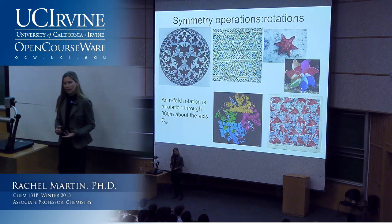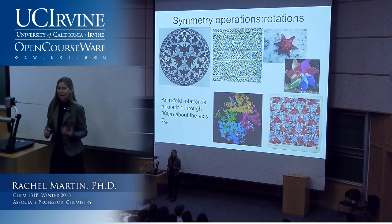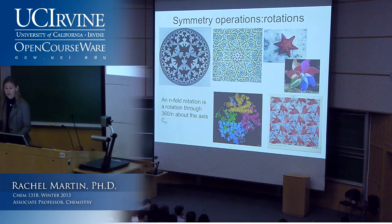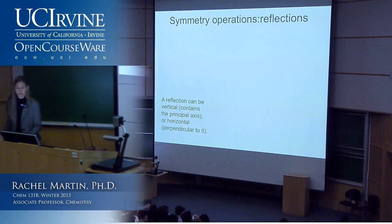To recap: a symmetry element can be an axis, a plane, or a point about which we perform the operation. The operation is the action you perform to the object that leaves it looking unchanged at the end. In the case of rotations, we describe this by the rotation 360 over N.